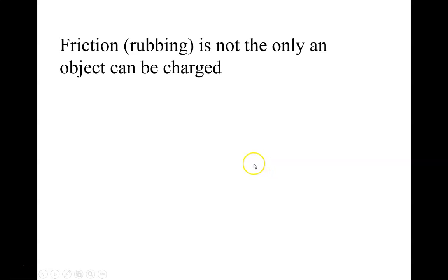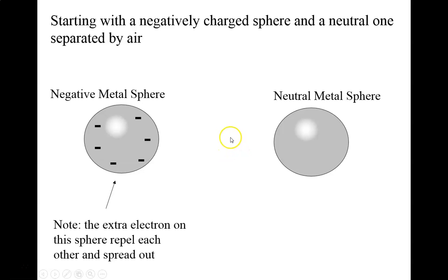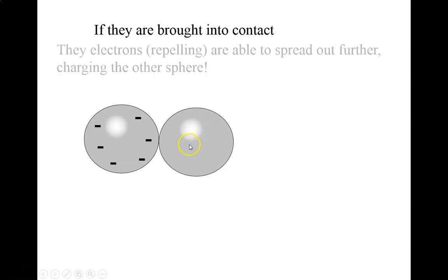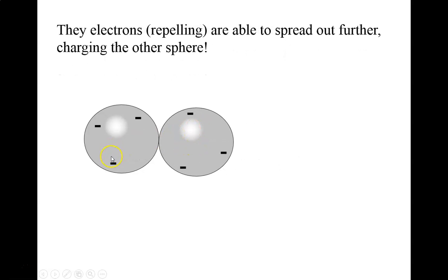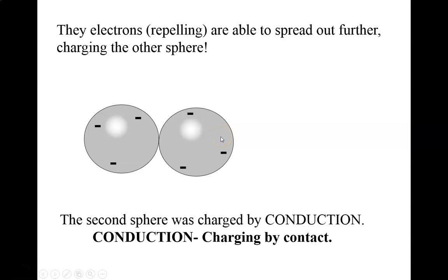Charging by friction — rubbing — is one way, but it's not the only way an object can be charged. One object can be charged by contacting another object, simply contacting it, if that one object is charged. So if I have a negative metal sphere and I bring it into contact with a neutral sphere, those extra electrons on the negative sphere want to spread out and get away from each other. In doing so, they spread out to the other sphere, and we've just charged that other sphere. This is called charging by conduction, also referred to as charging by contact — we conducted the electrons from one to the other.